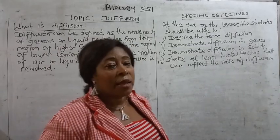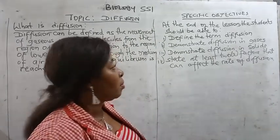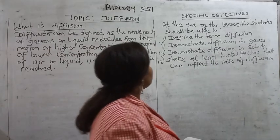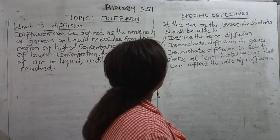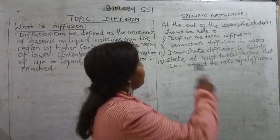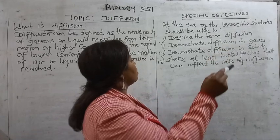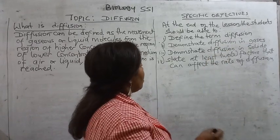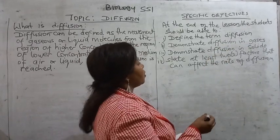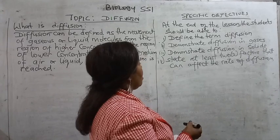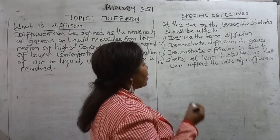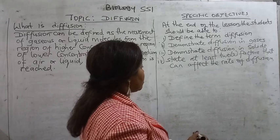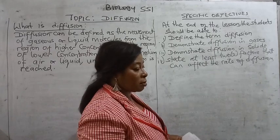At the end of this lesson, our students are supposed to be able to define the term diffusion, demonstrate diffusion in gases, demonstrate diffusion in solids, and state at least two factors that can affect the rate of diffusion.